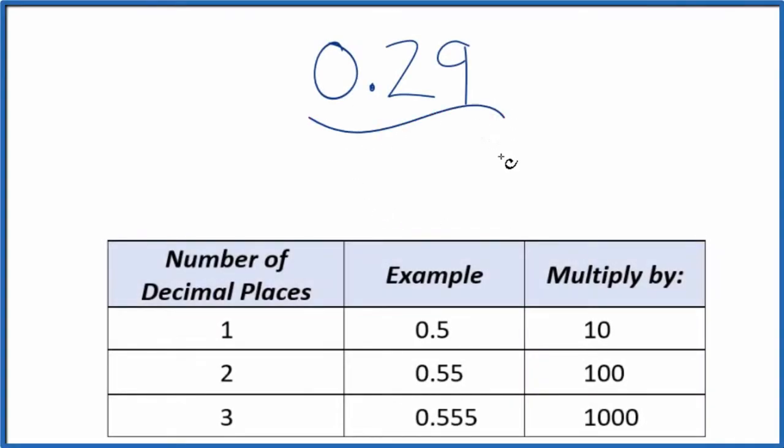Let's write the decimal 0.29 as a fraction. So we start out, let's just put it 0.29 over 1. We're only dividing by 1, so it's still 0.29. Now we have the start of a fraction.